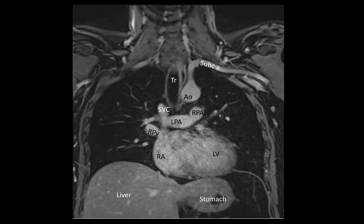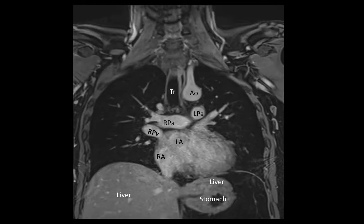We are now posterior enough to begin to see the left atrium, and now we can see a left pulmonary vein emptying into this left atrium. On the inferior aspect of the heart we also see the inferior vena cava emptying into the right atrium.